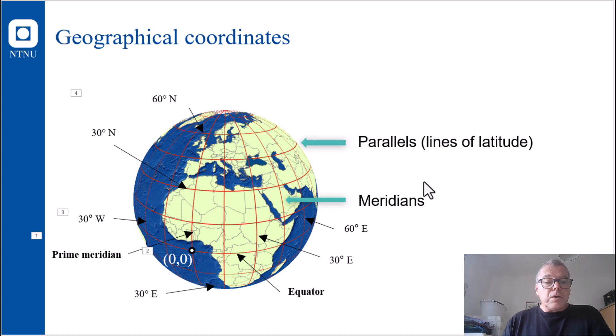Two other essential concepts are the parallels or lines of latitude. These are called parallels since they're parallel to Equator. And we have meridians, lines going north, south, from one pole to another. And Greenwich is just one of several possible meridians.